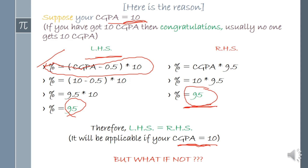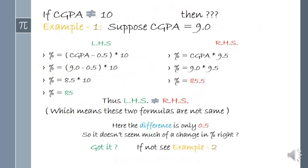But what if your CGPA is not 10? Suppose your CGPA is 9.0. On the left hand side I have written the formula suggested by BPUT to correctly convert CGPA to percentage, and on the right hand side the formula people often use but which is not suggested by BPUT. Now you put your CGPA in and calculate — you get 85 on the left hand side.